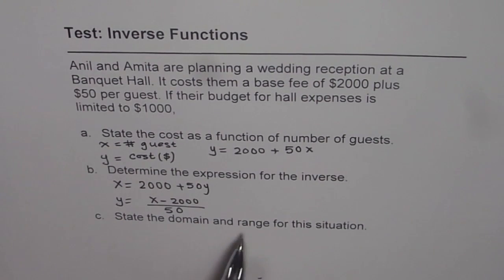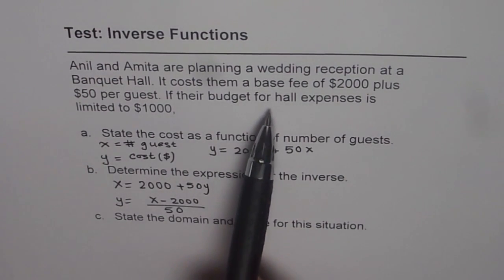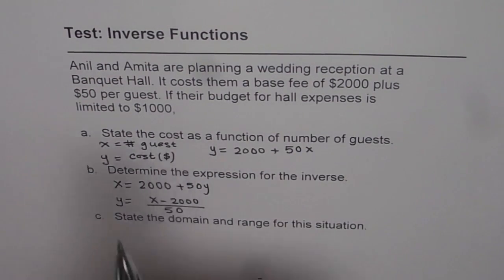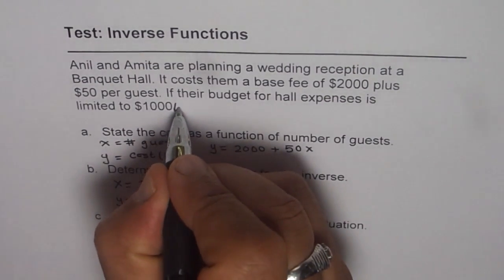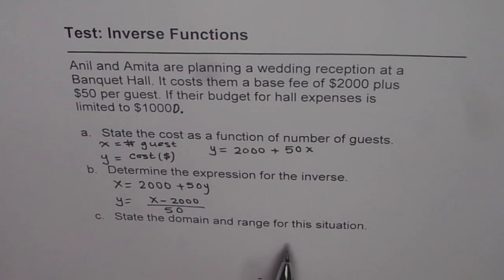Now let's state domain and range for this situation. You can find domain and range from the budget. If their budget for the hall expenses is limited to, this is actually $10,000, let me make it $10,000. Then what is the domain and range?